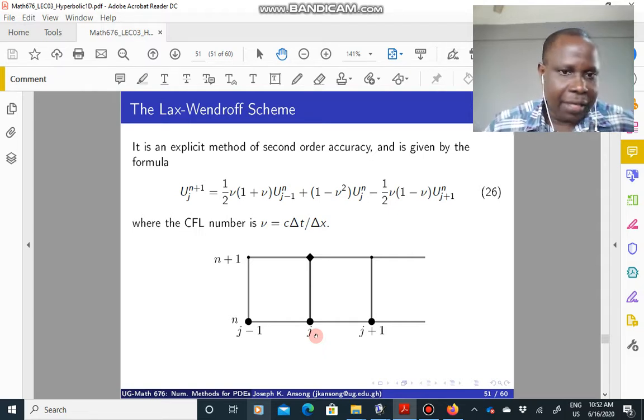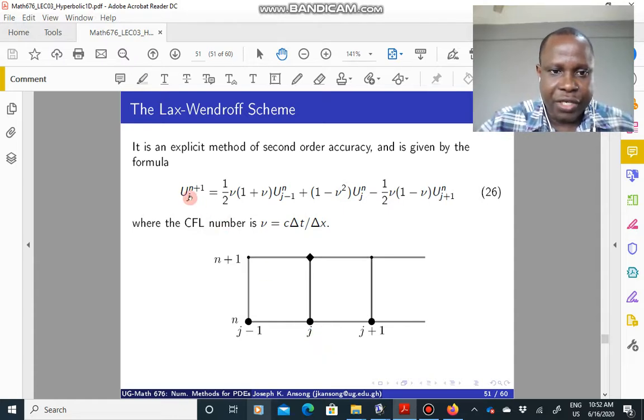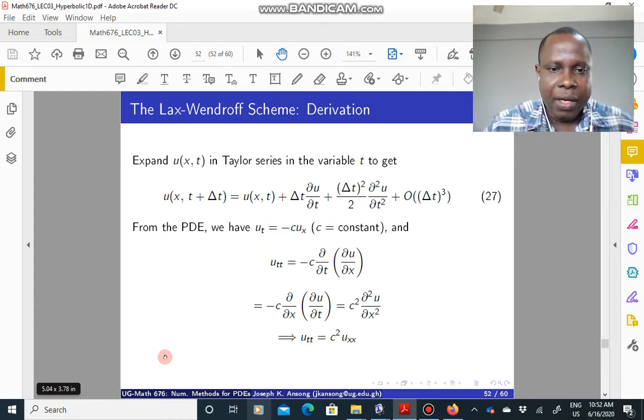Now, the Lax-Wendroff scheme is a second order accurate scheme, and it's given by this expression here, equation 26. Where again, the CFL number here is given by nu, which is c delta t over delta x. That's just a stencil for the scheme. It uses j minus 1, j plus 1, n and n plus 1 time levels.